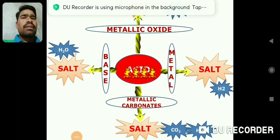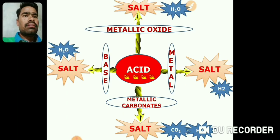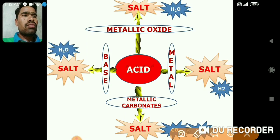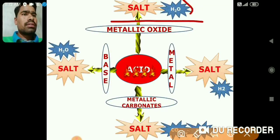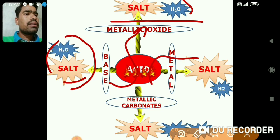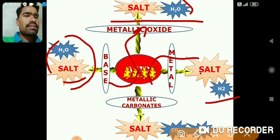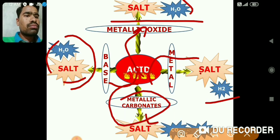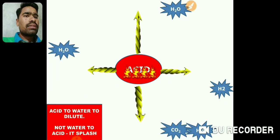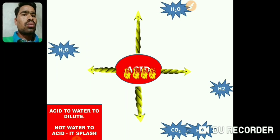Hello students, welcome back. In the last period we saw the chemical properties of acids — reactions of acids with different compounds. When acid reacts with metal oxides, it forms salt and water. When acid reacts with base, it also forms salt and water. When acid reacts with metal, it forms salt and hydrogen gas. When acid reacts with metal carbonates, it forms three products: salt, carbon dioxide, and water.